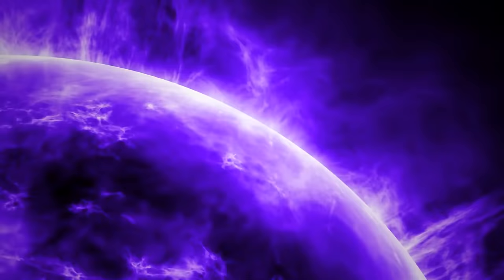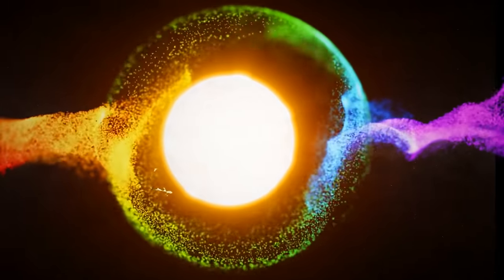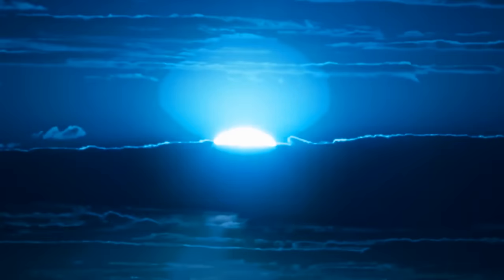During sunrise and sunset, short blue waves get reflected, but the long red ones reach us perfectly. That's why we see sunsets as pink, orange, or red. But what would happen if the sun had a different color?